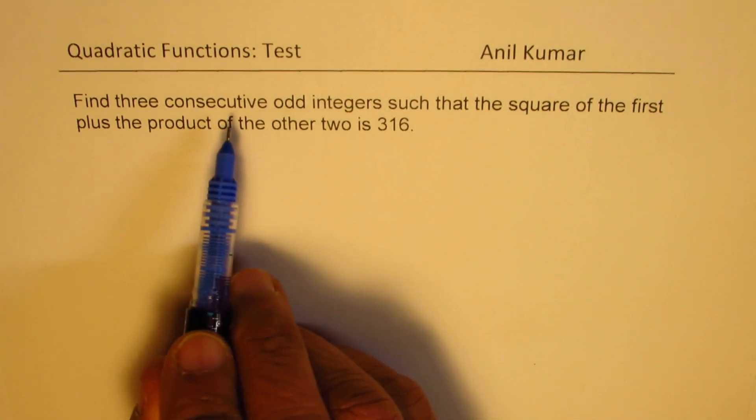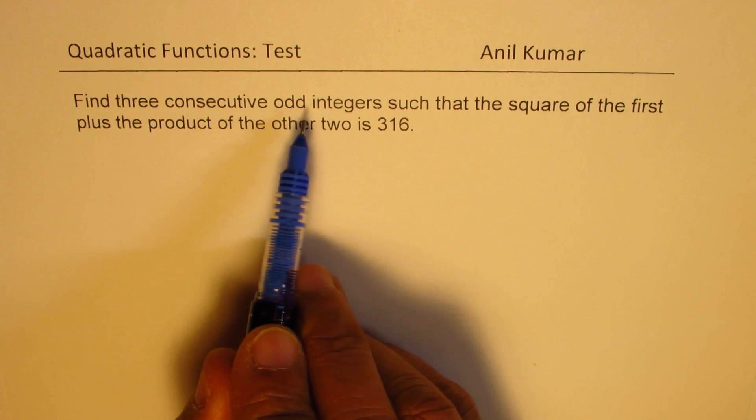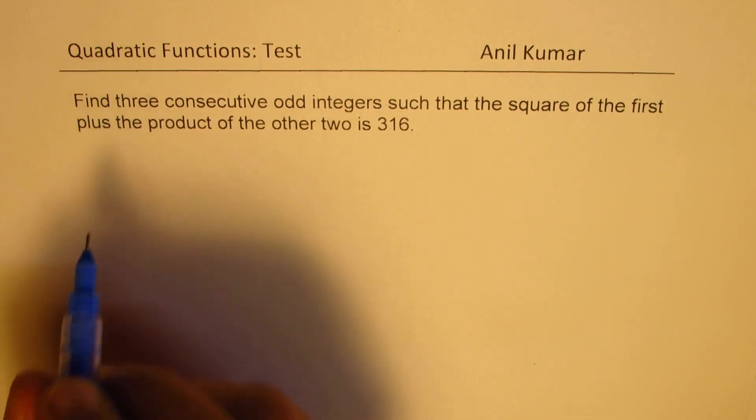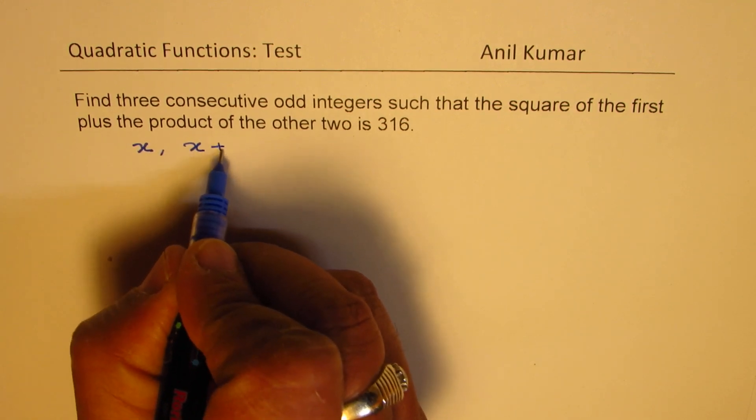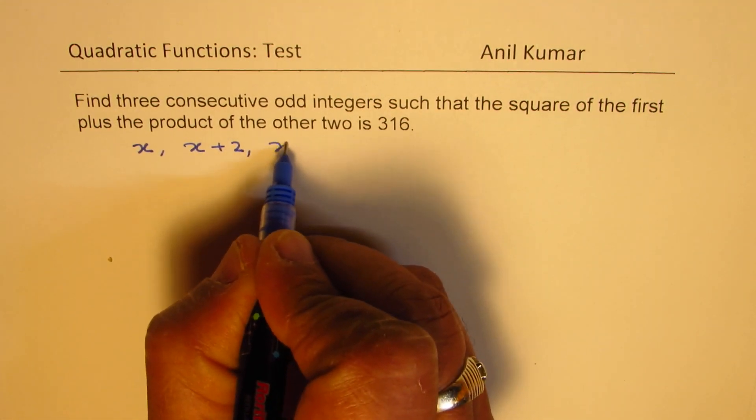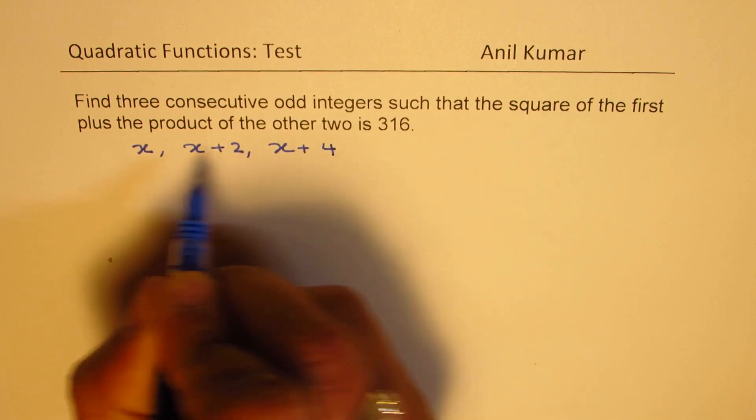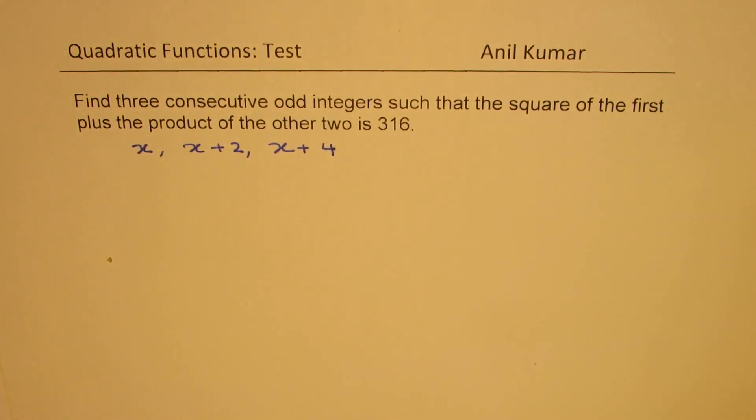Now we are looking into three consecutive odd integers—that means we have to skip by one. So let the integers be x, x plus 2, and x plus 4. So these are the three consecutive odd integers.